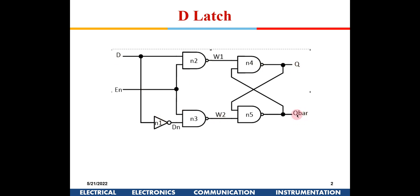D-bar will get reflected at Q-bar. The difference between a latch and a flip-flop is: whenever the enable signal is high, the latch will be transparent — whatever changes are happening at D will get reflected at Q. In a flip-flop, instead of an enable you have a clock signal. For a positive edge flip-flop, whenever the clock is going high during that small transition period, whatever is at D gets captured. When the clock is high and D changes, that will not be reflected. For a negative edge triggered flip-flop, it captures when the clock goes from high to low.